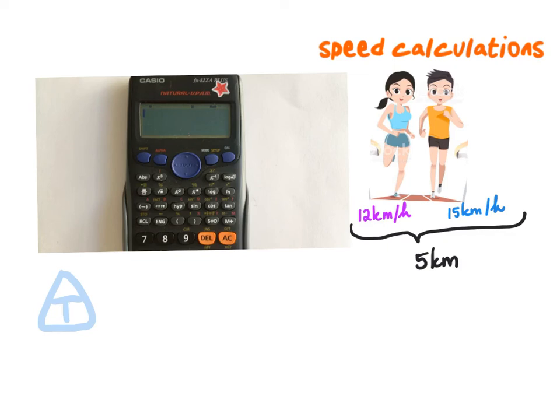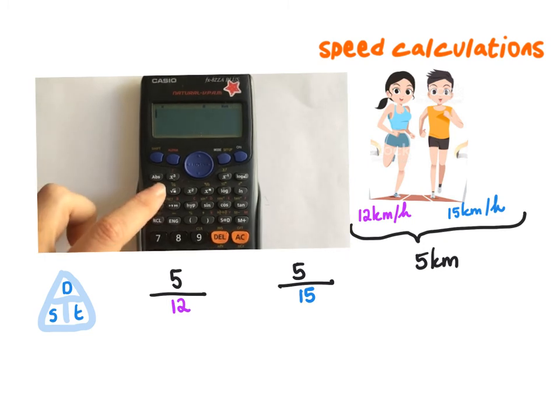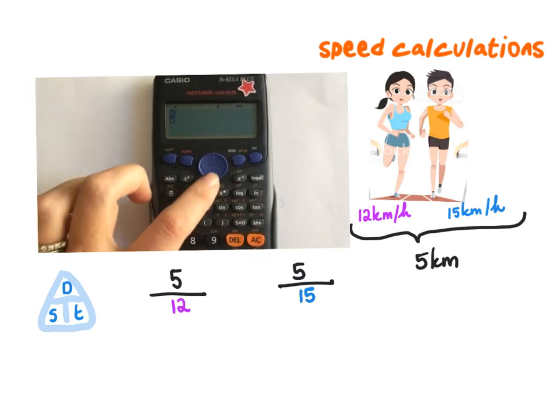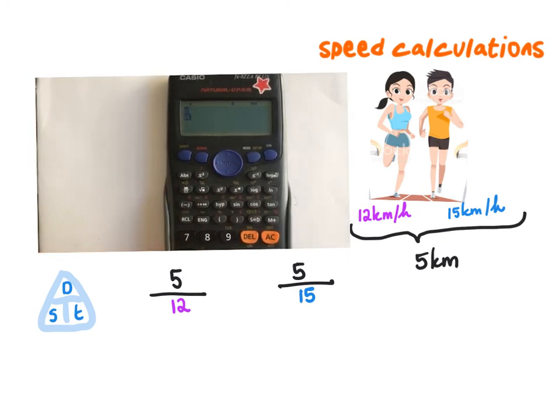And let's see how it will work in this case if we need the time. So we have speed equals distance over time. And if I need time, I need to say distance, which in this case is 5 kilometers for each of them, divided by the speed, which for Carla is 12 kilometers an hour, and for Dion is 15 kilometers an hour. So let's see how we can do this on the calculator and what the answer means once we type it in, because we will be getting a fraction.